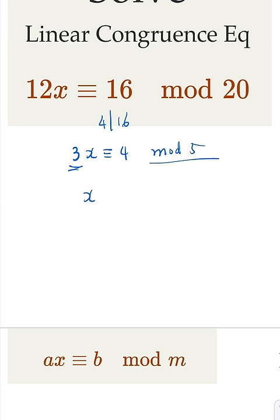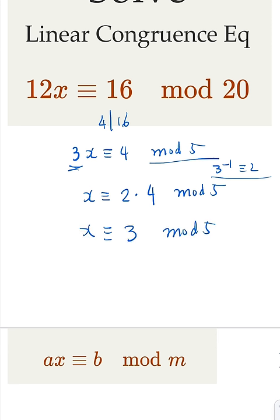The inverse of 3 in mod 5 is 2. That gives us 8, and 8 mod 5 is 3. So the answer is 3.